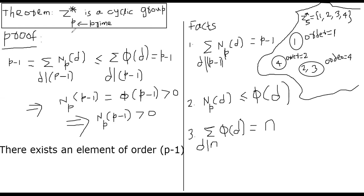If there is an element of order p minus 1, then we can conclude that element generates all the elements of the group, because z*p itself is a group of order p minus 1.